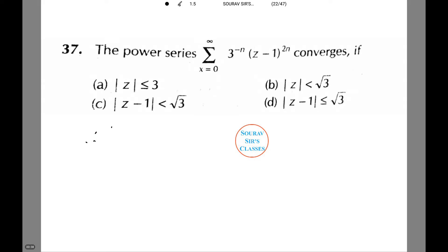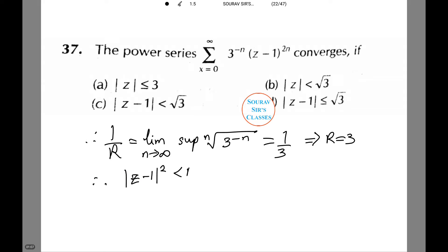Therefore, 1 by r equals limit n tends to infinity root over 3 to the power minus n root n equals 1 by 3. Thus, r equals 3. Therefore, mod of z minus 1 whole square less than r equals 3.